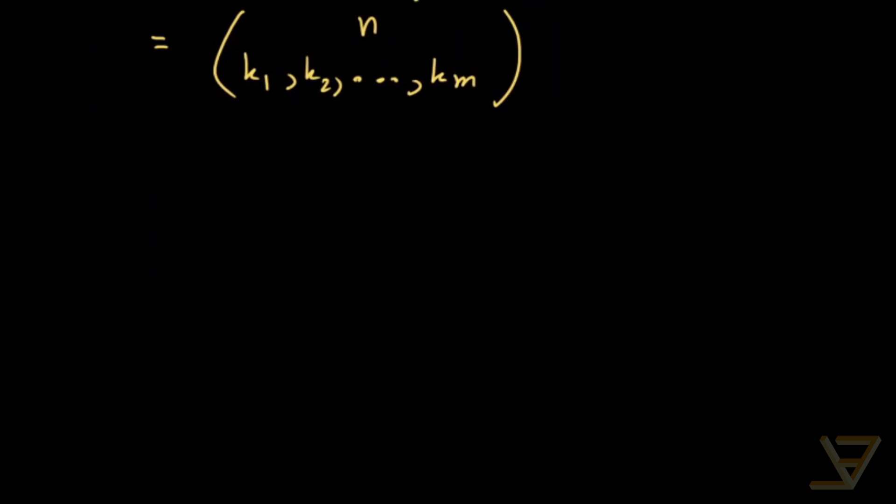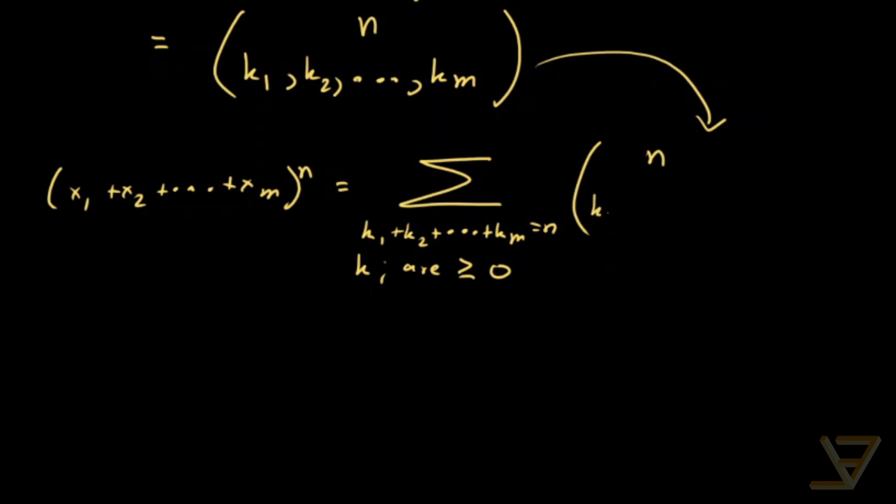So what the multinomial expansion is, is that x1 plus x2 all the way through to xm to the power of n is equal to the sum over k1 plus k2 all the way through to km equals n, and the ki are greater than or equal to zero integers. We have n choose k1, k2, all the way through to km, times x1 to the k1, x2 to the k2, all the way through to xm to the km. And that is the multinomial theorem.